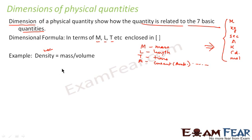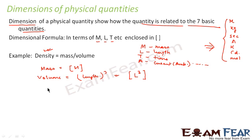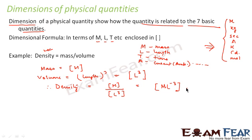The dimensional formula for mass is written as M. Volume is basically length cubed, so its dimensional formula is L³. Therefore, density can be written as M divided by L³, which gives us M·L⁻³. So M·L⁻³ is the dimensional formula for density, showing how density is derived from the basic quantities.